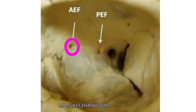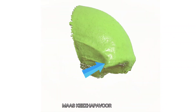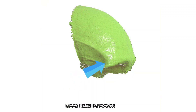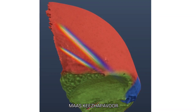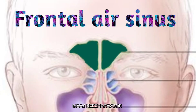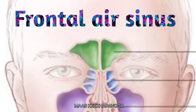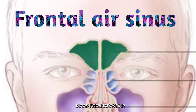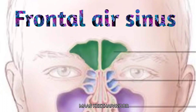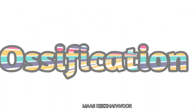Between the frontal bone and ethmoid bone, there are two openings: anterior and posterior ethmoidal foramina for the corresponding nerves and blood vessels. The zygomatic process is a very short process, one on each side, exiting from the lateral end of the supraorbital margin and articulating with the frontal process of the zygomatic bone. The temporal line arises from the posterior margin of the zygomatic process and splits into superior and inferior temporal lines. Frontal air sinuses are found deep to the glabella and supraciliary arches, separated by a septum, making the frontal bone a pneumatic bone.